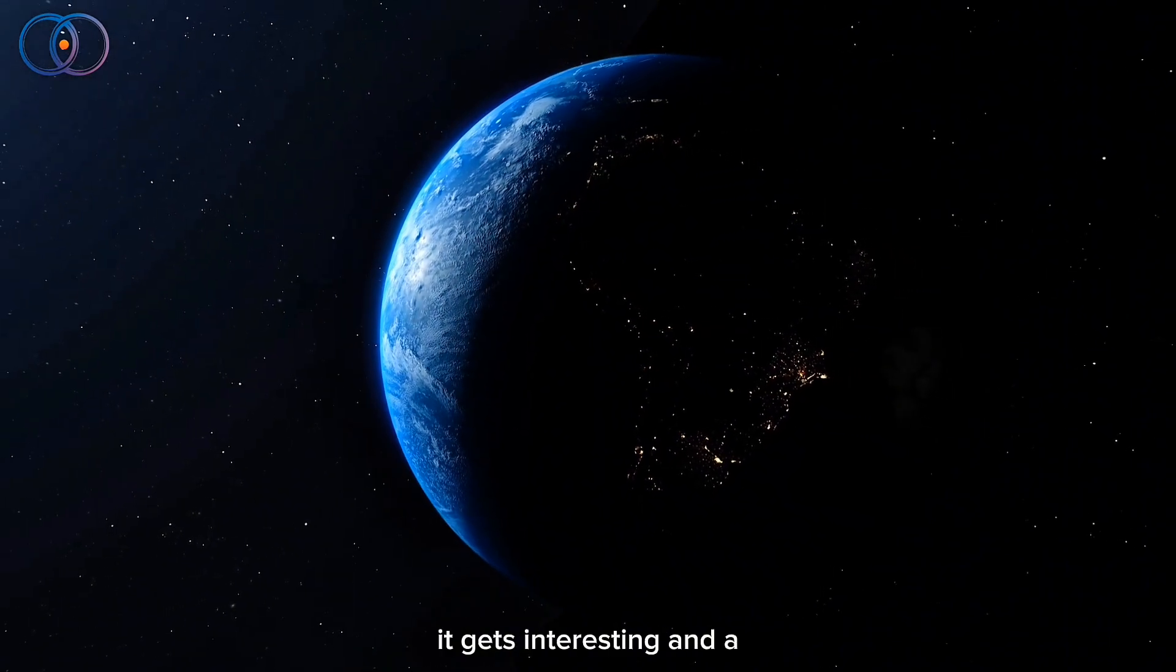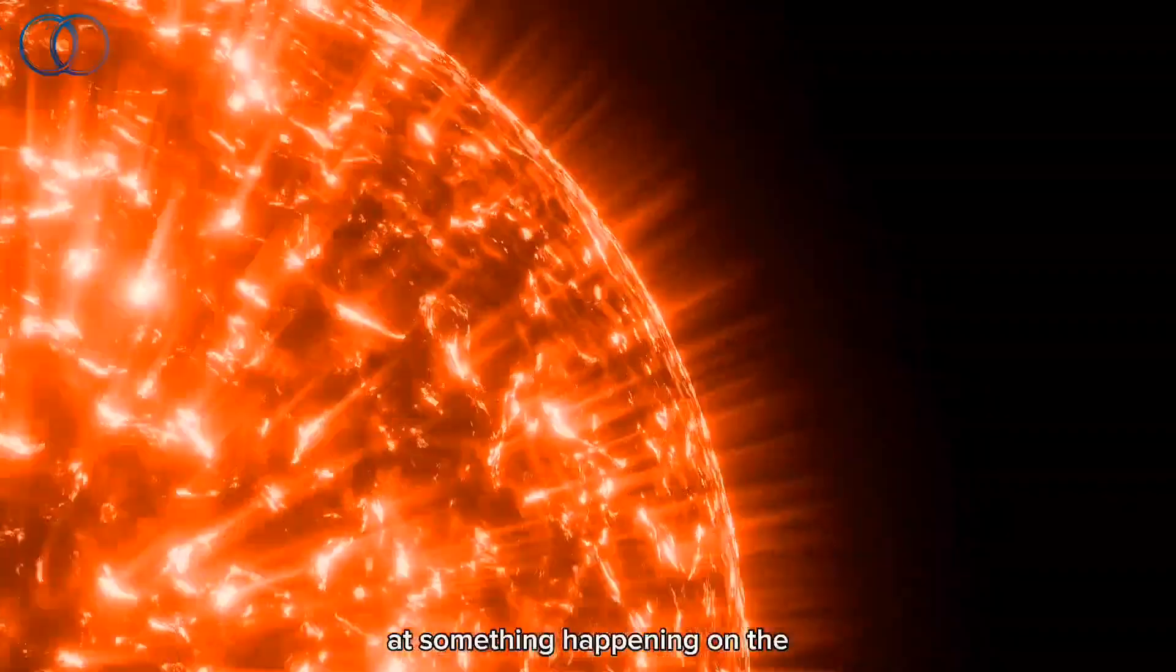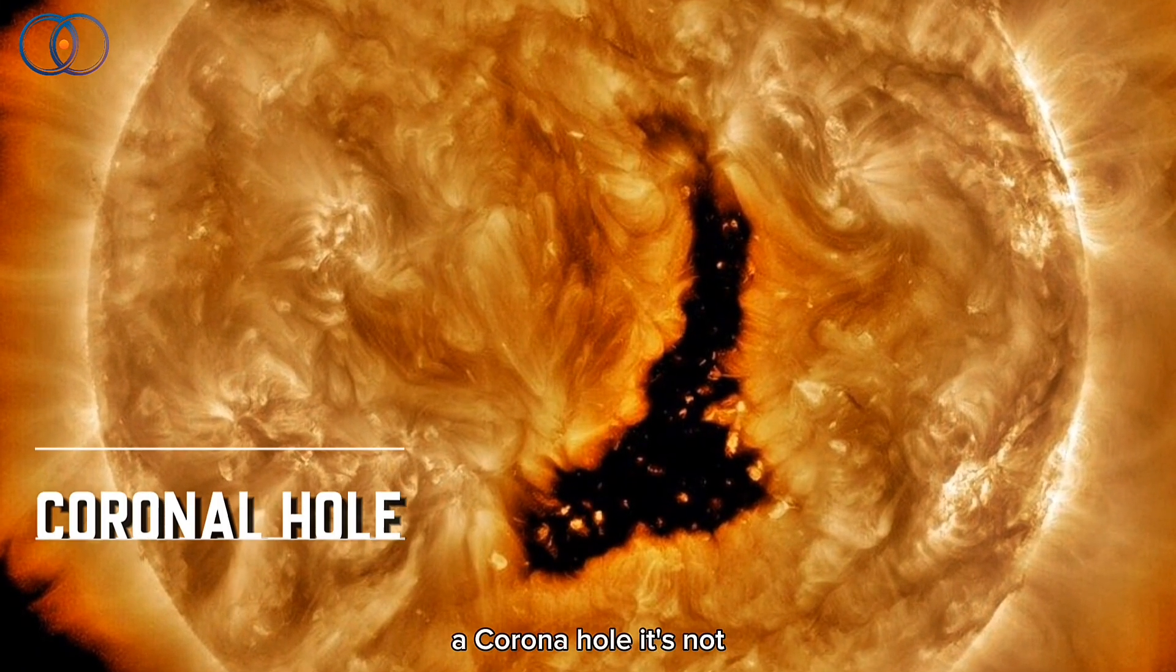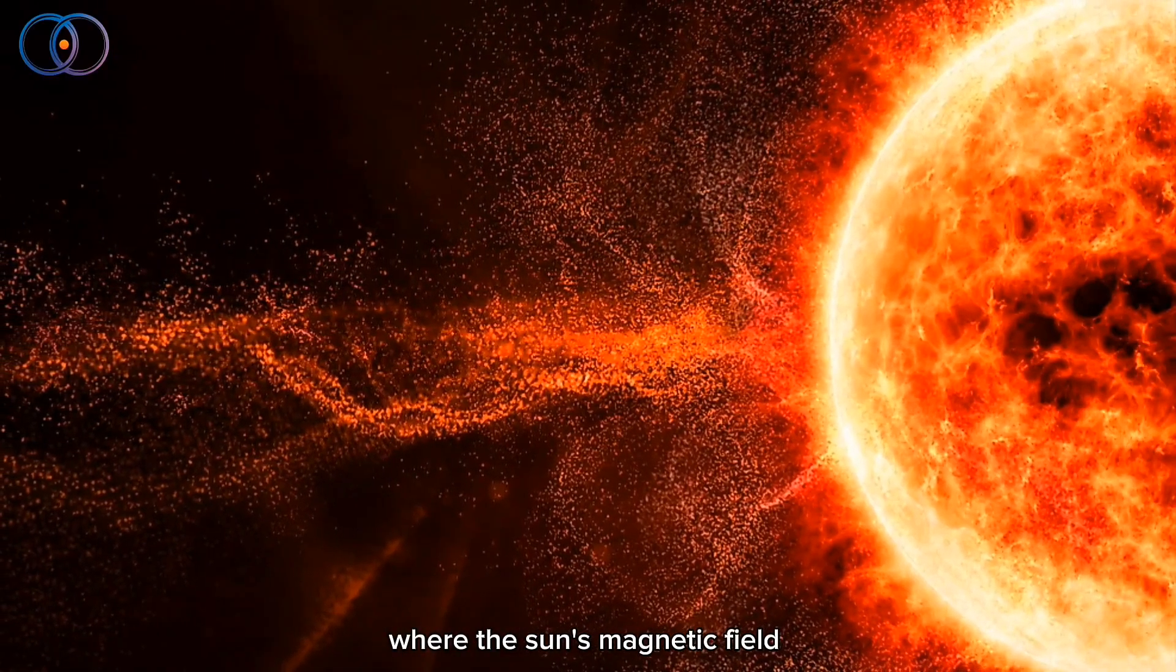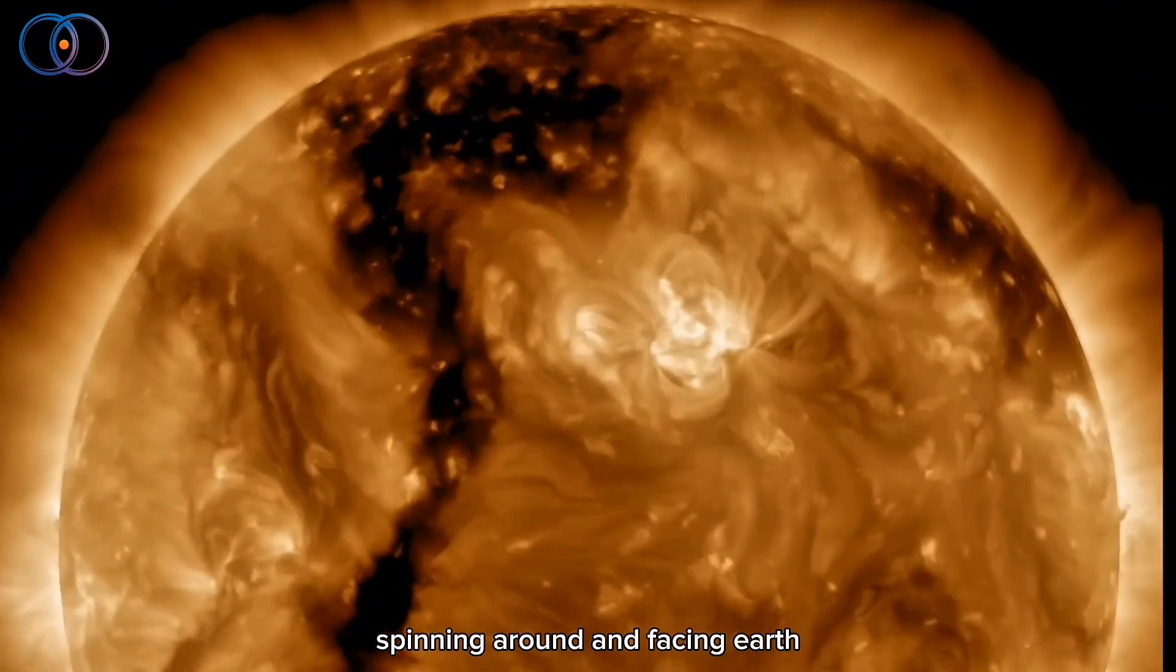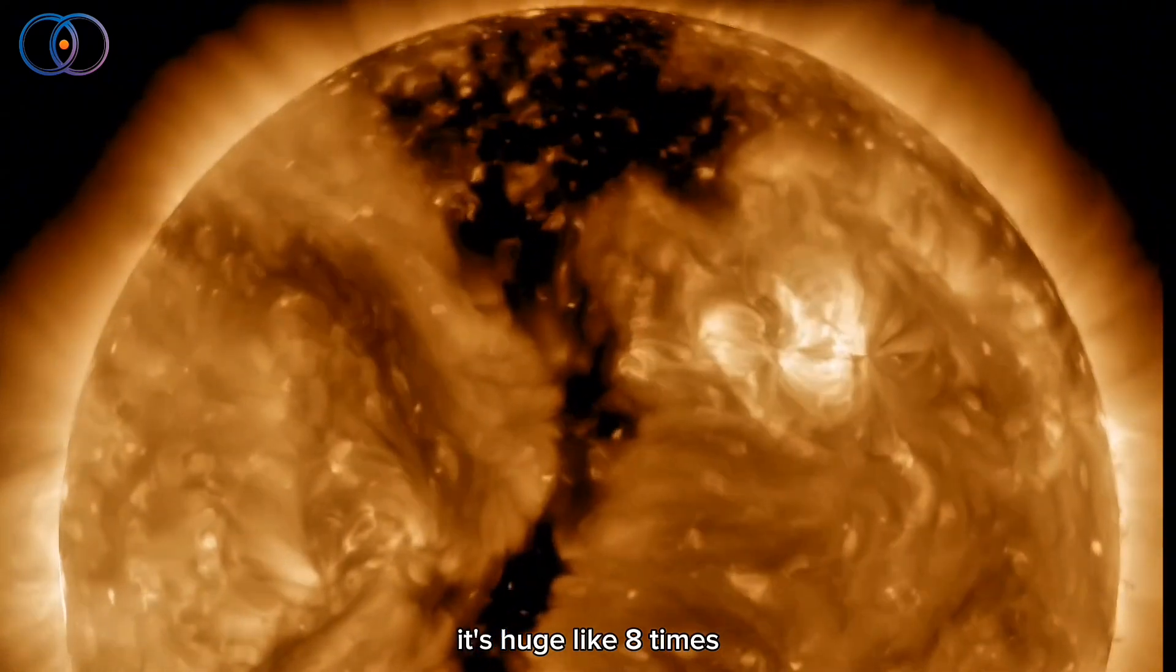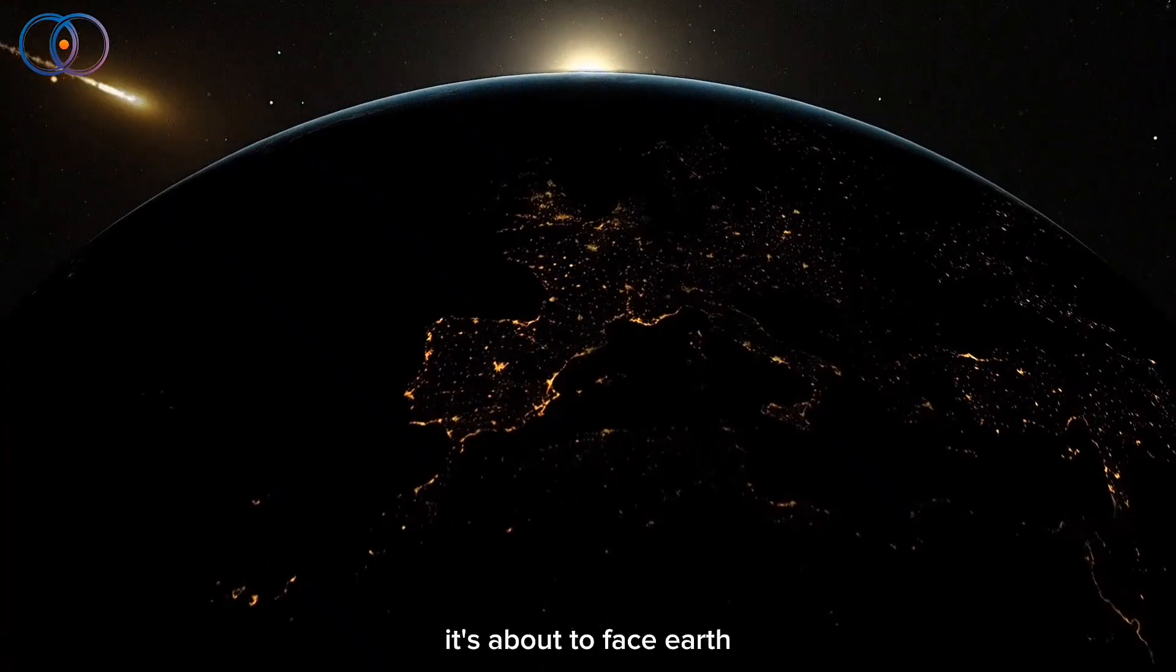Now here's where it gets interesting, and a little scary. Scientists are looking at something happening on the sun. There's a giant dark patch on the sun called a coronal hole. It's not a hole you could fall into, but it's an area where the sun's magnetic field opens up and lets out really fast solar wind. This particular coronal hole has been spinning around and facing Earth again and again for months. It's huge, like eight times bigger than Earth. And now during its eighth trip around, it's about to face Earth again.